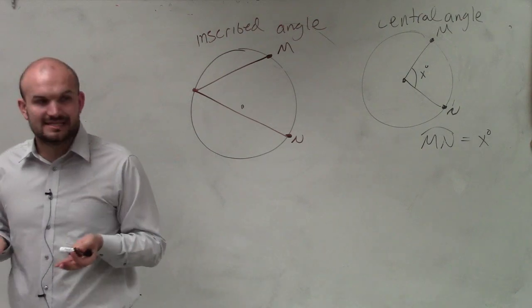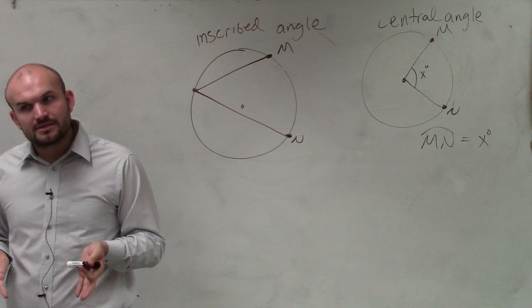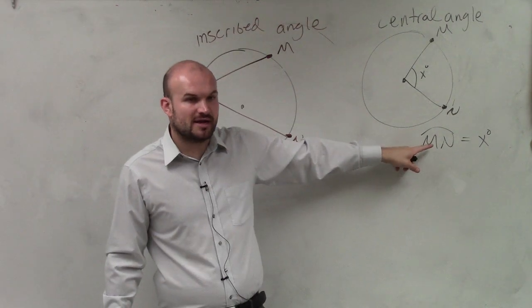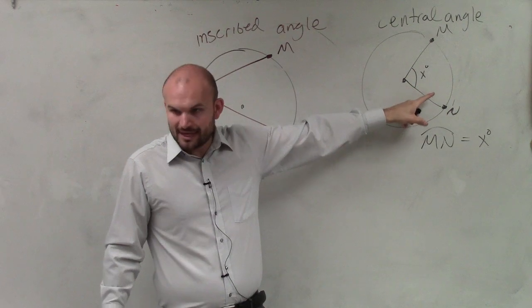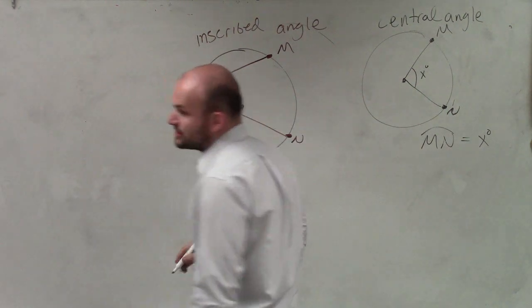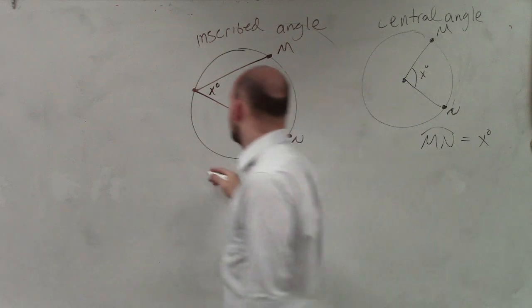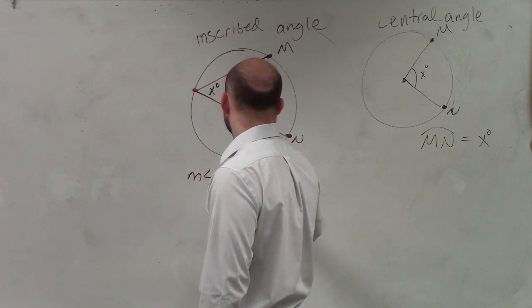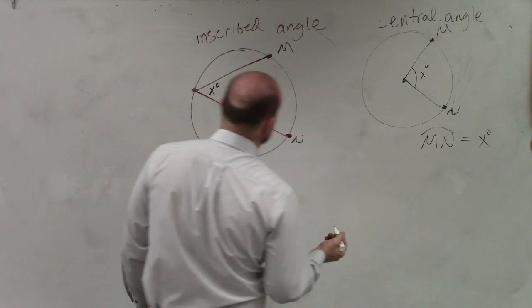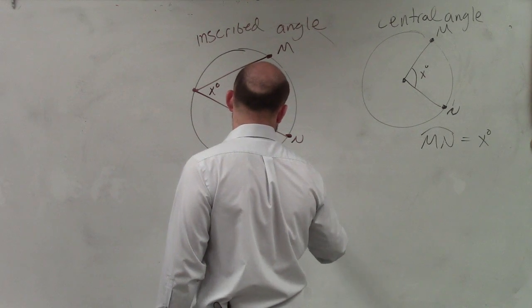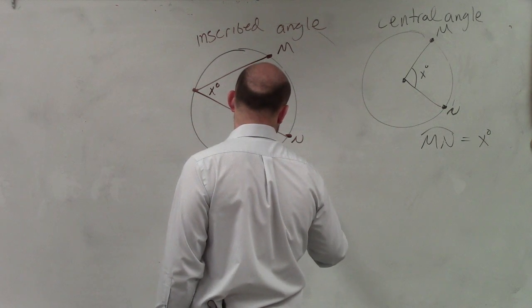This creates different measurements. We understood that for a central angle, the measure of the arc was equal to that angle, right? However, for an inscribed angle, the measure of angle x is equal to one-half the measure of arc MN.